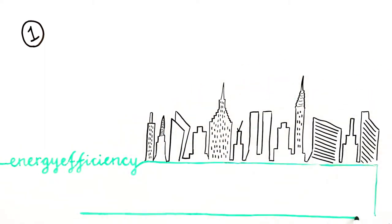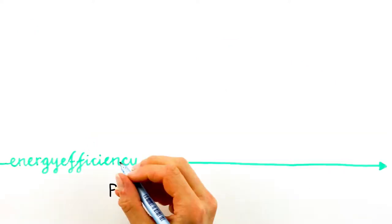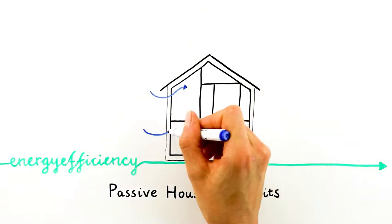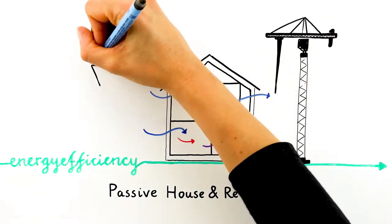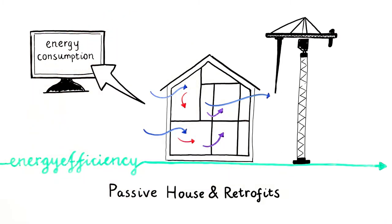We need to design buildings that consume as little energy as possible for heating, cooling, hot water, lighting and electrical services. Applying passive house design standards, retrofits and making it easy for end users to monitor their energy consumption will make a big difference.